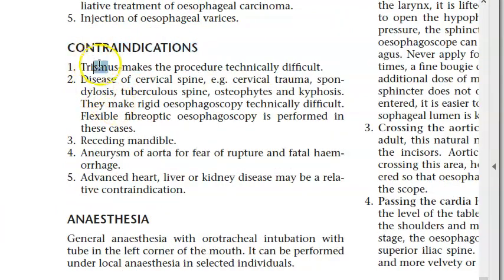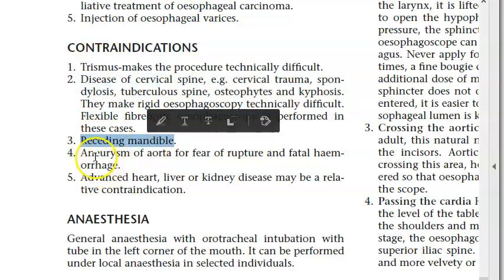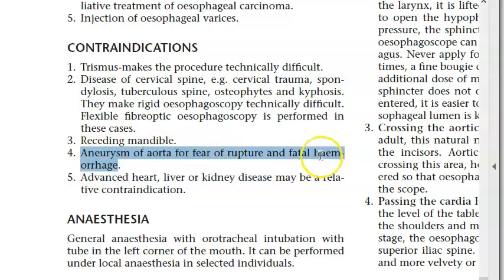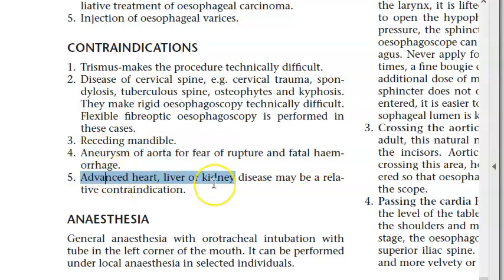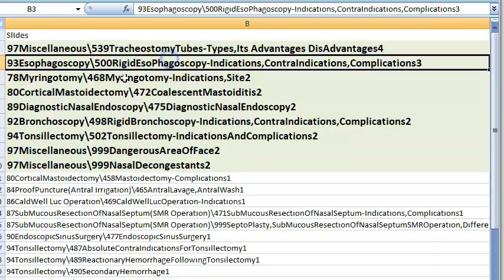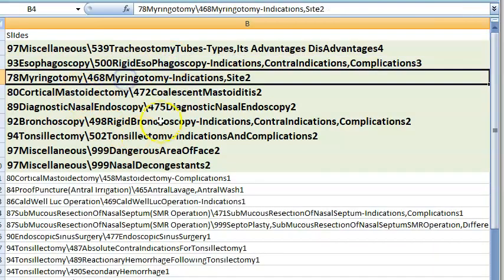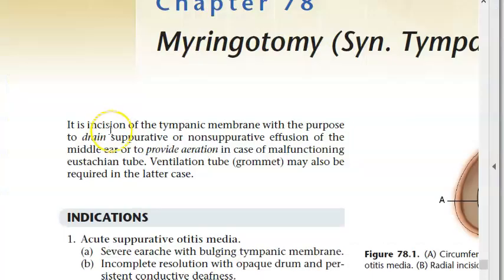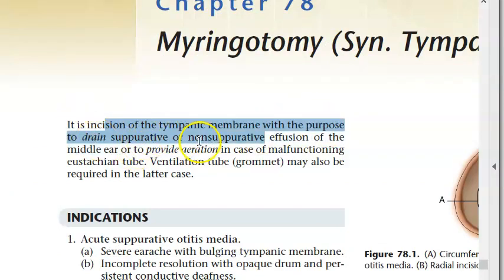Contraindications to rigid oesophagoscopy: trismus (locked jaw), disease of cervical spine, receding mandible, aortic aneurysm (risk of rupture and fatal haemorrhage), advanced heart/liver/kidney disease.